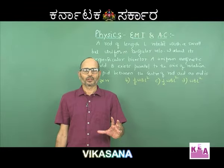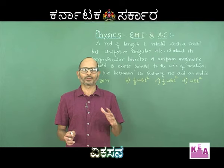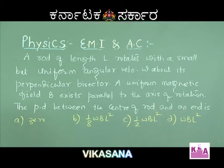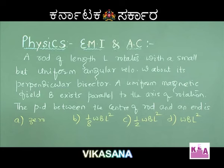Here is a slightly better problem than the previous one. The previous one was just to make you understand the basic concept. A rod of length L rotates with a small but uniform angular velocity omega about its perpendicular bisector. A uniform magnetic field B exists parallel to the axis of rotation. The potential difference between the center of the rod and an end is one of the given options: 0, 1/8 ωBL², or 1/2 ωBL².